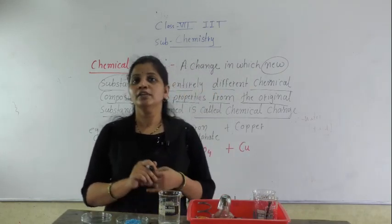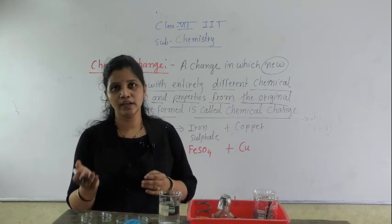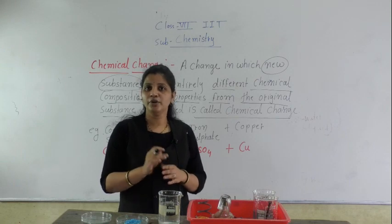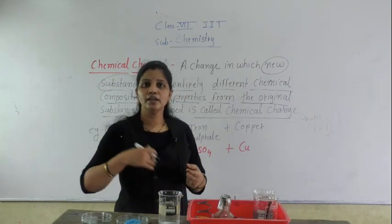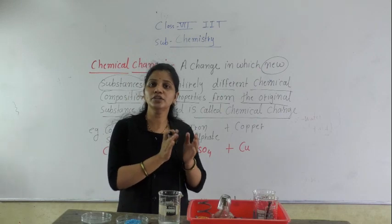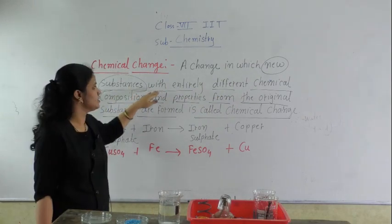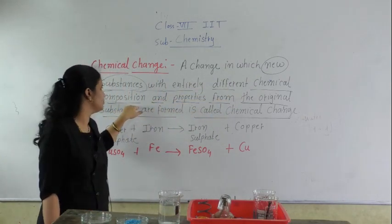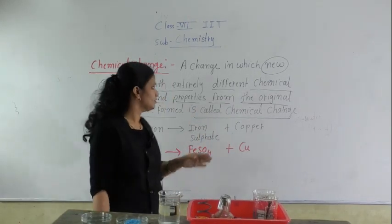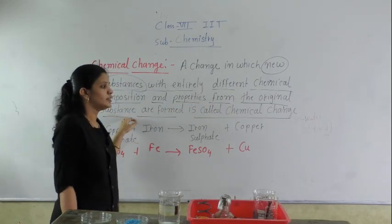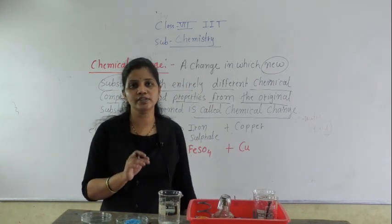In the physical change, no new substance is formed — only the state, maybe color, maybe shape, and size will change, but not all the properties of that substance will change. But in a chemical change, the entire original substance is changed and a new substance is formed. A change in which a new substance with entirely different chemical composition — all the characteristics are different from its original substance — this change is known as chemical change.